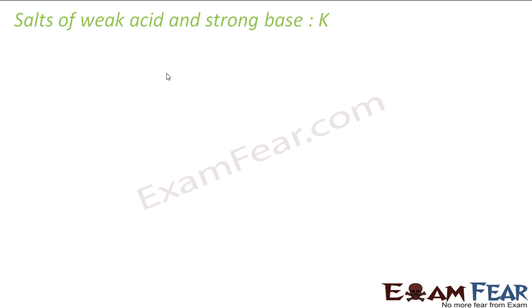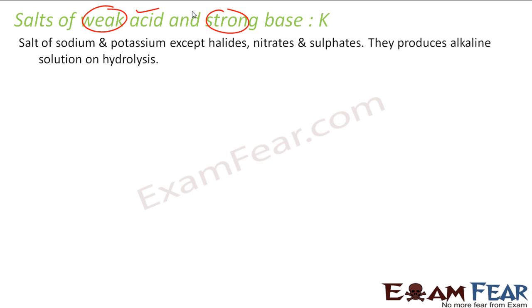Let's take the salt of weak acid and strong base and try to find the K for that. The typical example is the salt of sodium and potassium. They are strong base and weak acid and they produce alkaline solution on hydrolysis. The pH is more than 7 because of the strong base and weak acid. So it will be basic solution with pH more than 7.